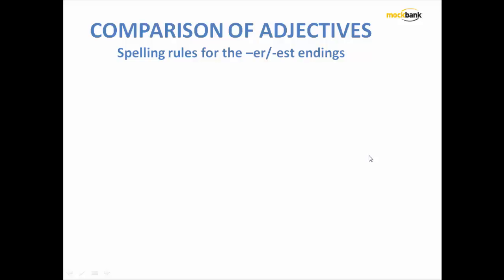Hello everyone, welcome to Markbank. Let us see how to make comparative and superlatives of words that end with er or have est. What I am going to do with them, let's say this is the first word. Adjectives ending in 'e' add r or st.